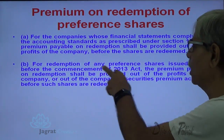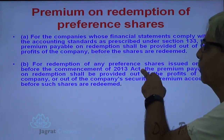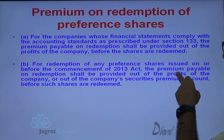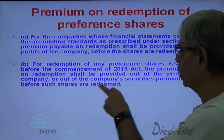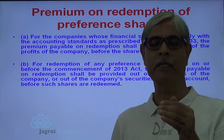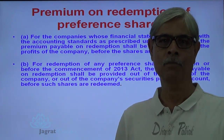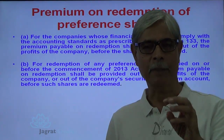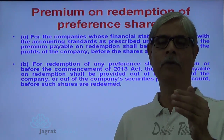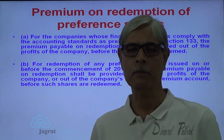For redemption of any preference shares issued on or before the commencement of the Companies Act 2013, the premium payable on redemption shall be provided out of the profits of the company or out of the company's security premium account before such shares are redeemed. So if the shares have been issued prior to the commencement of the Act, the preference share redemption premium can be set off against profit and loss account or against security premium. This is an important point to be noticed by students.